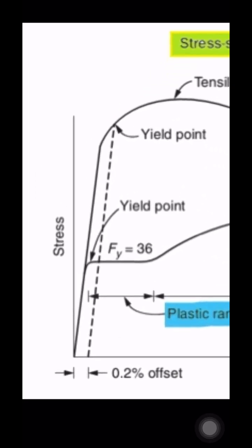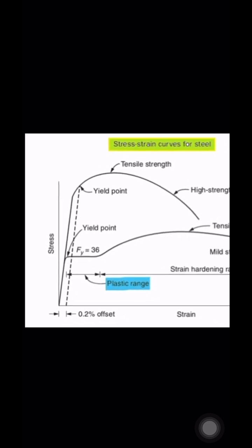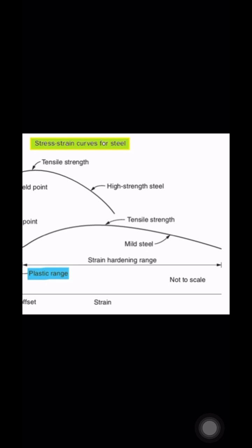The stress-strain curve for high-strength steel does not exhibit a pronounced yield point. After the elastic limit is reached, the increase in stress gradually decreases until the tensile strength is reached.